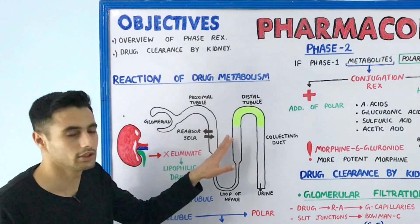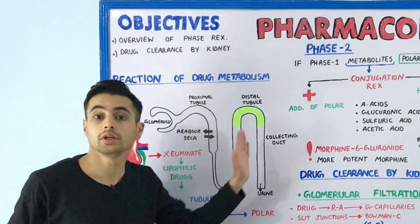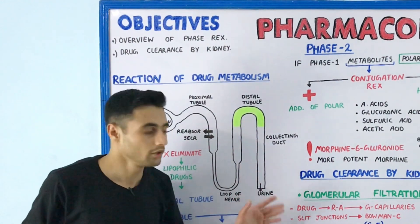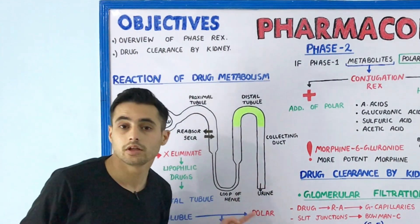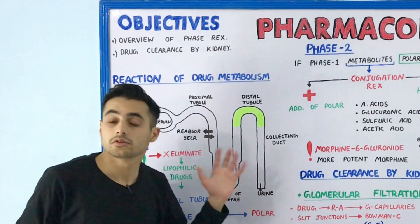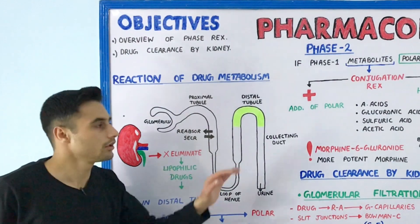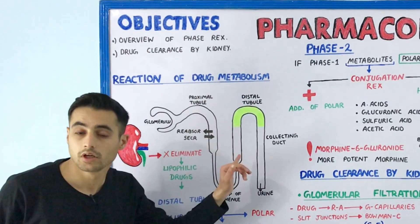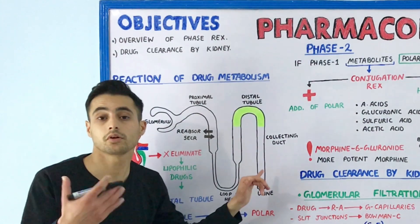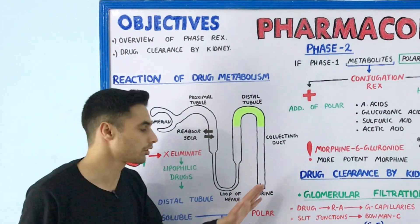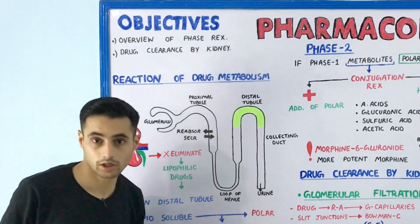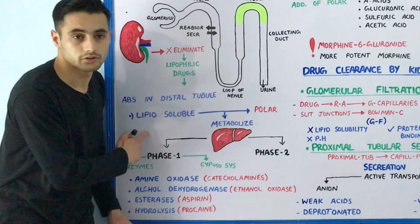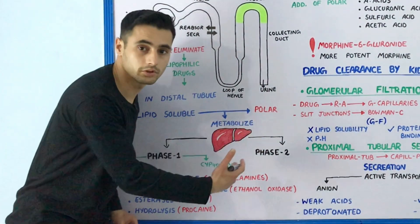The kidneys cannot eliminate lipophilic drugs because in the distal portion, shown in green, the lipophilic drugs are reabsorbed into systemic circulation and are not excreted in the urine. To prevent this, lipophilic drugs are converted into polar or water-soluble compounds so they can be eliminated in the urine.